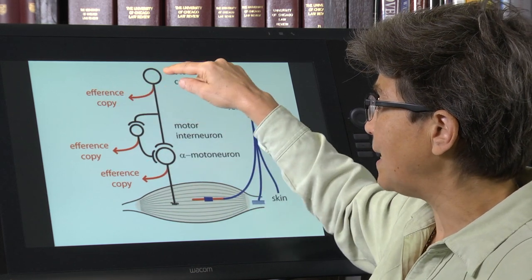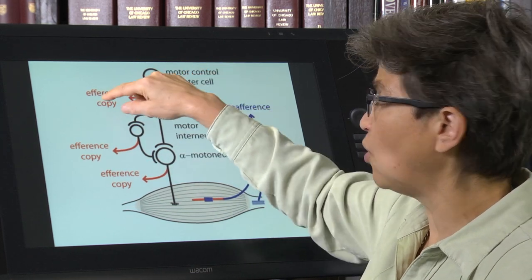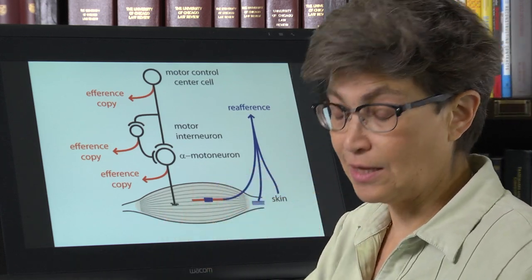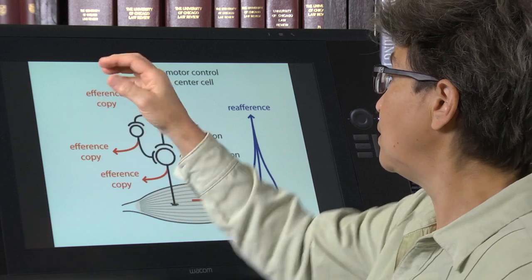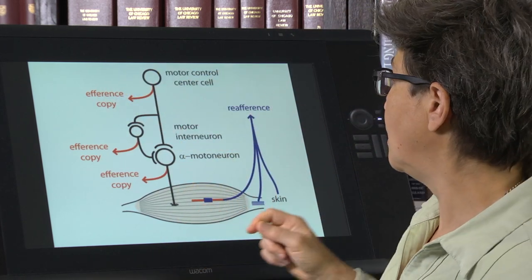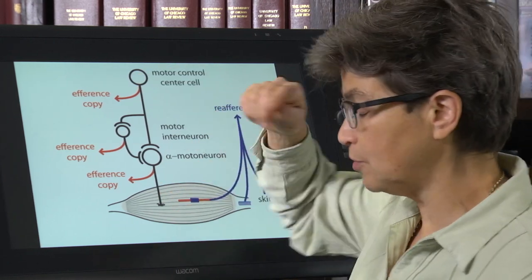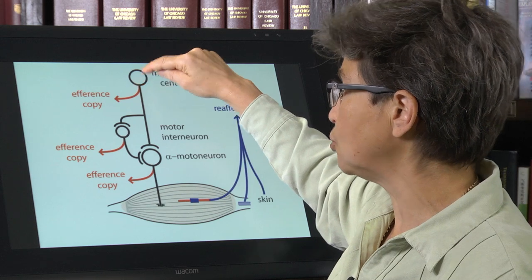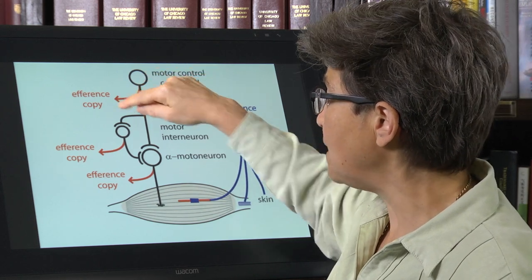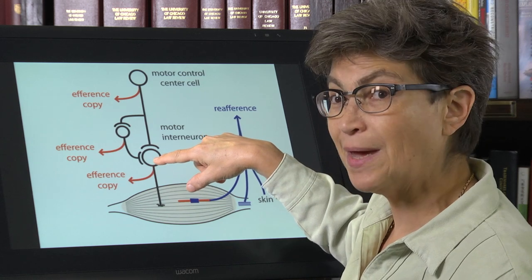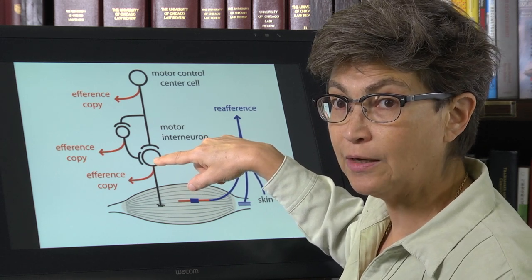And along the way, it also gives off a collateral that tells, as it turns out, the cerebellum what it's doing. So it gives a copy of the order and there's a game of telephone here, so that the efference copy that the motor control center puts out may be a little bit different than the message that the alpha motor neuron in the end receives.